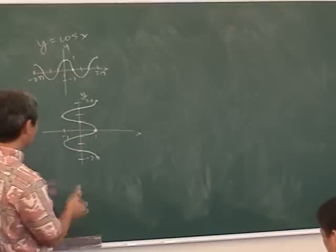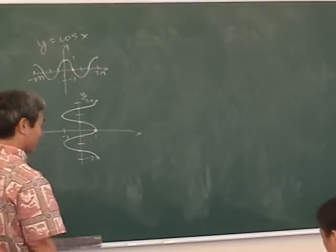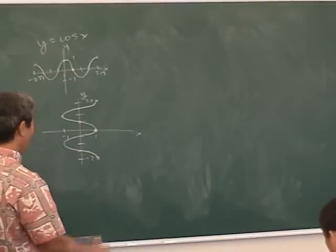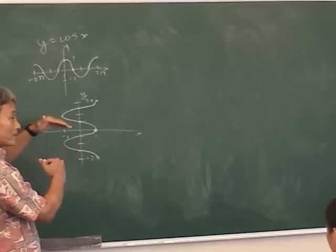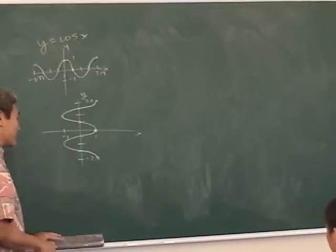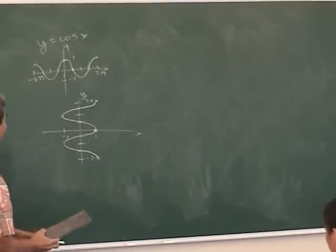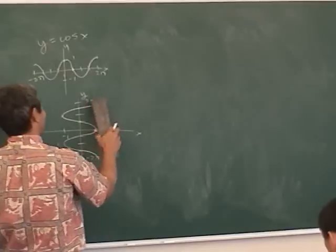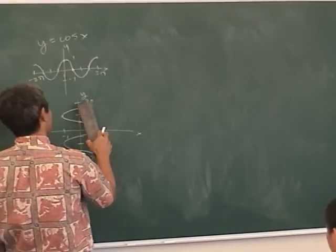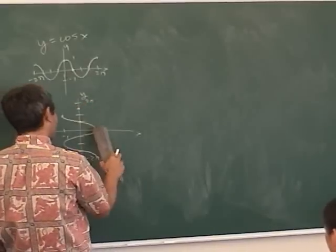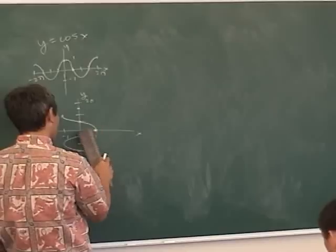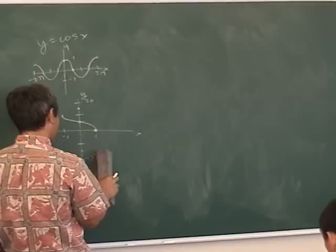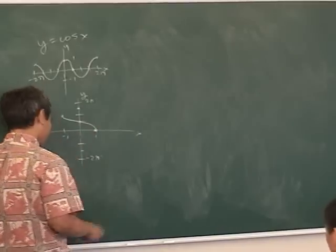But this is not a function — it doesn't pass the vertical line test. So what do we do to make it a function? You restrict the range. There's a standard way of doing it. Mathematicians said we're going to restrict this graph to be between zero and pi — the range.